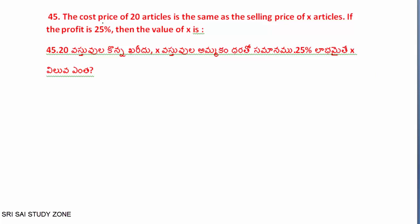Next question: The cost price of 20 articles is the same as the selling price of X articles. If there is a profit of 25 percent, find X.